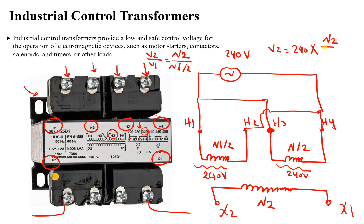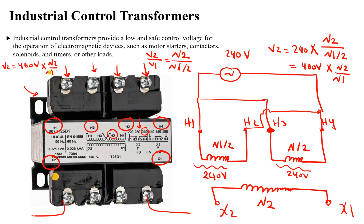So V2 = 240 × N2 / (N1/2) = 480 × N2/N1. Therefore, in case one with a 240-volt input, V2 equals 480 × (N2/N1).